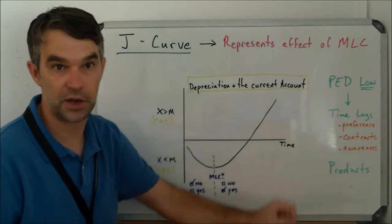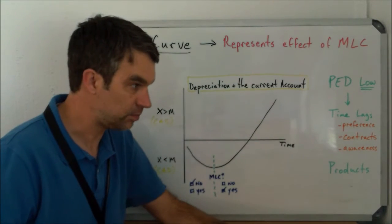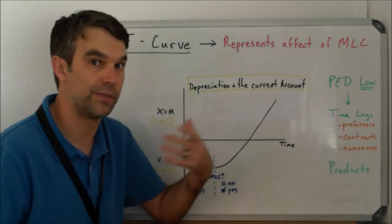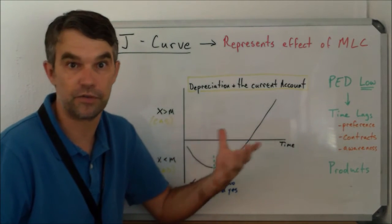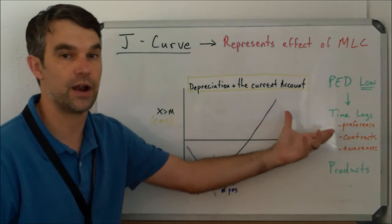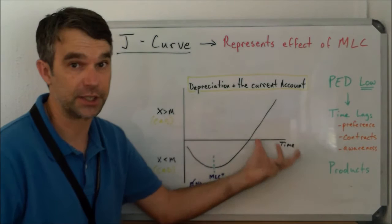It's something like lumber or something like that. Maybe they've already signed in advance that they'll buy X amount of lumber every month. Therefore, they have to wait for that contract to expire before their demand could actually change.